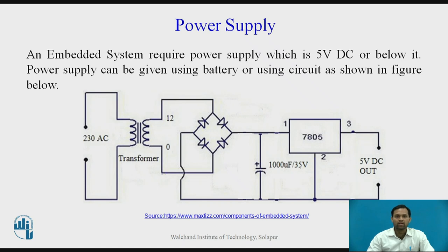First, we will see power supply. An embedded system requires a power supply of 5V DC or below — sometimes 3.3V DC. Power supply can be given using a battery or using circuitry. For example, 230V AC supply is given as input, and using a transformer the voltage is reduced and given to the diode circuitry — that is a bridge rectifier. The rectifier converts the AC input to a DC signal, which is then given to a capacitor for filtering.